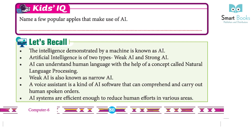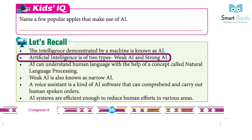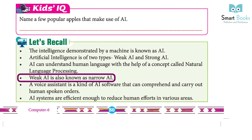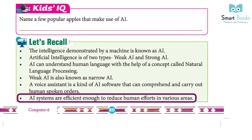Kids IQ: Name a few popular apps that make use of AI. Let's Recall: The intelligence demonstrated by a machine is known as AI. Artificial intelligence is of two types: Weak AI and Strong AI. AI can understand human language with the help of a concept called natural language processing. Weak AI is also known as Narrow AI. A voice assistant is a kind of AI software that can comprehend and carry out human-spoken orders. AI systems are efficient enough to reduce human effort in various areas.